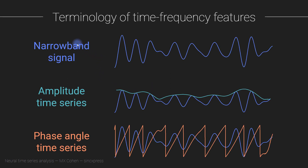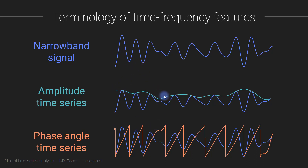Let me start by reminding you of the features we are extracting from the broadband signal. We use wavelet convolution, or other methods, but mostly wavelet convolution, to extract the narrowband signal, the amplitude time series, or you'd square this to get the power time series. For this video, we are interested in the phase angle time series — that sawtooth-looking process that goes up and down, telling us about the exact timing. The phase angle time series tracks the exact timing of the narrowband signal independent of the amplitude.